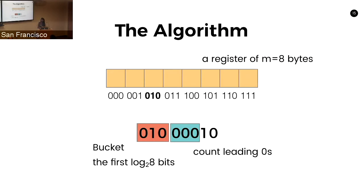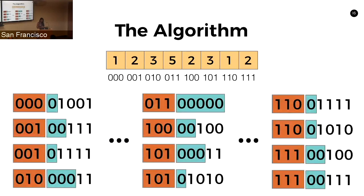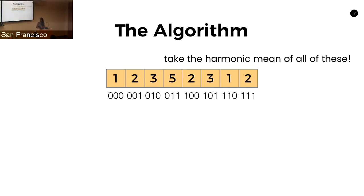Then you count the number of leading zeros in the rest of the number and put that number into that bucket. Repeating this with more numbers, you do the same bucketing and get a stream of counted zeros and ones. Similar to splitting friends over different vending machines, you split values into different buckets. Since they're uniformly distributed, the unique values per bucket correspond to approximately one-eighth of the total unique values. Hashing — it's magic.